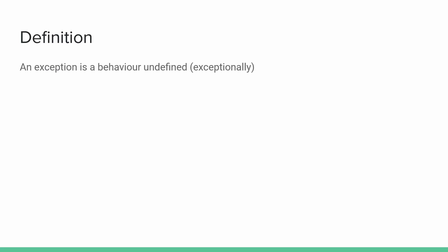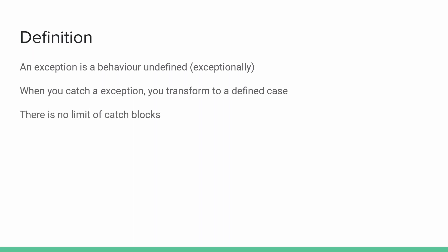I'm going to start with some definitions about what is an exception. An exception is a behavior which is undefined, and that's why it's called an exception — because it's exceptional. When you catch an exception, you actually transform that exception from undefined to a defined case. And as you already know, there's no limit to how many catch blocks you can have — you can have an unlimited amount of catches.